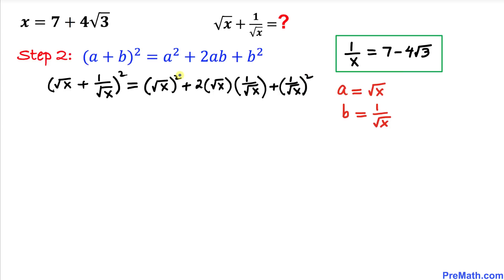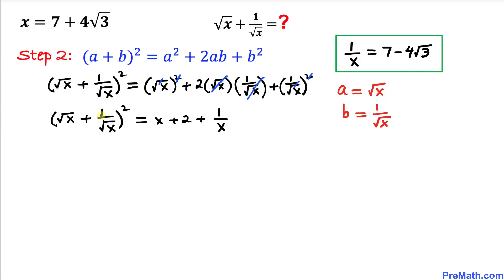On the right-hand side, the square and square root undo each other, and square root of x times 1 divided by square root of x cancel each other out. Likewise, the square and square root in the last term undo each other. So the right-hand side simplifies to x plus 2 plus 1 divided by x. Now we replace x with 7 plus 4 times square root of 3 and 1 divided by x with 7 minus 4 times square root of 3.